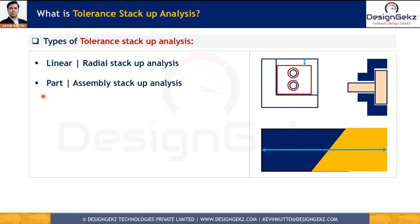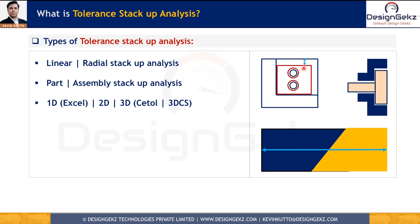The second way is part or assembly stack-up analysis, based on whether we are doing the stack-up on a single part or an assembly of multiple parts. The third type is 1D, 2D, and 3D stack-ups. A 1D stack-up analysis involves all one-dimensional contributors — as in this example of blocks — where all contributing dimensions determining the clearance are lined up in one direction only.